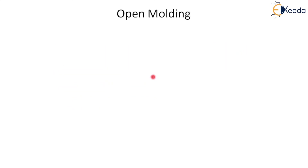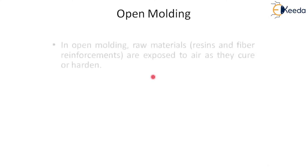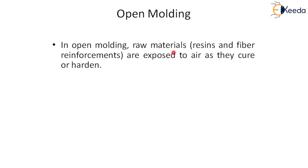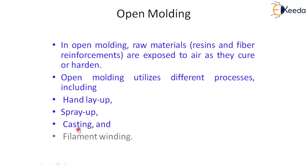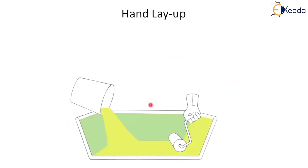First of all we will start with the open molding process. In open molding, the raw material is exposed to air during the process — whether it is curing or hardening. The raw materials are exposed to air, and it utilizes different processes including the hand layup method, spray up process, casting, and filament winding. These are the various open molding processes used by industry, and the process is also very simple.